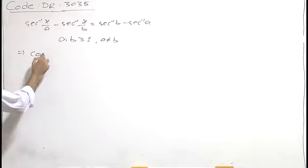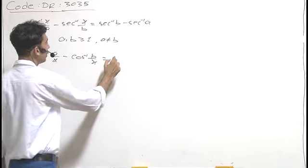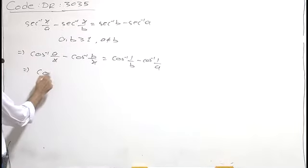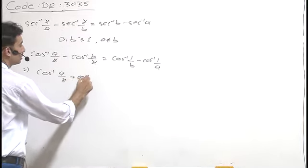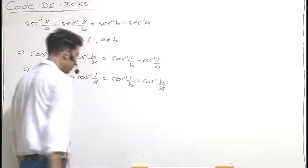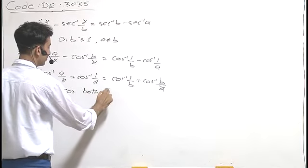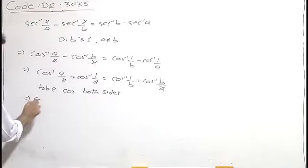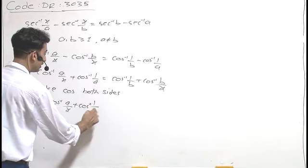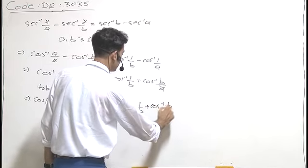This can be written as cos inverse (A/x) minus cos inverse (B/x) equals cos inverse (1/B) minus cos inverse (1/A), which rearranges to cos inverse (A/x) plus cos inverse (1/A) equals cos inverse (1/B) plus cos inverse (B/x). Now, if we take cos of both sides, we get cos of [cos inverse (A/x) plus cos inverse (1/A)] equals cos of [cos inverse (1/B) plus cos inverse (B/x)].